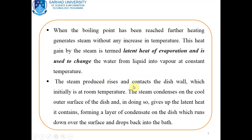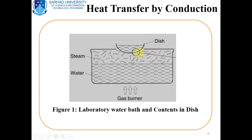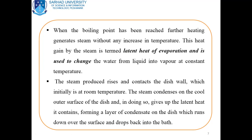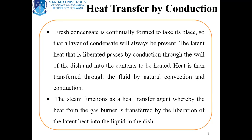The steam produced rises and contacts the dish wall. After generation of steam, the steam touches the dish wall, which initially is at room temperature. The steam condenses on the cool outer surface of the dish, and in doing so gives up its latent heat content. This forms a layer of condensate on the dish, which runs down over the surface and drops back into the bath. Fresh condensate is continuously formed to take its place, so a layer of condensate will always be present.